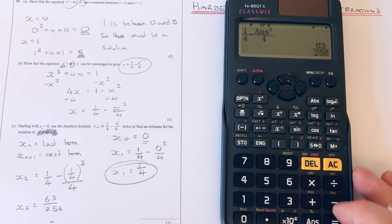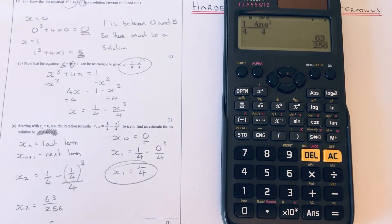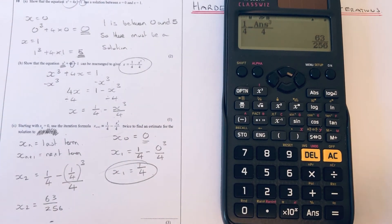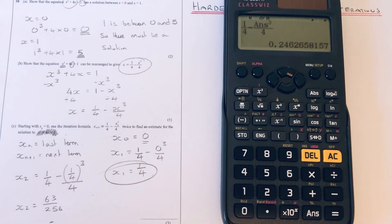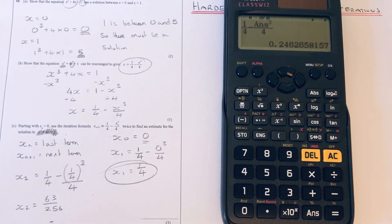If it did ask for any other terms, you could just press the equals key on the calculator. If you wanted x₃, just press the equals key. If you want x₄, just press it again. Okay, so if you like this video, make sure you like and subscribe, and I'll see you next time. Bye bye.